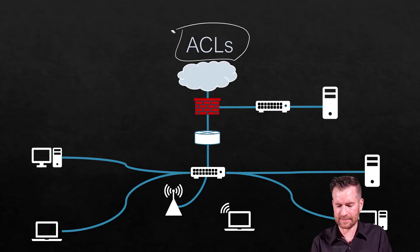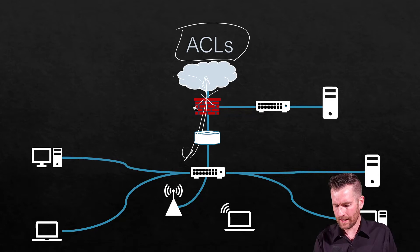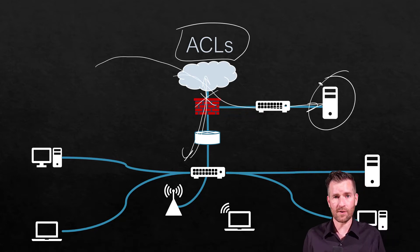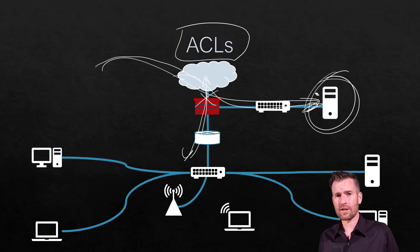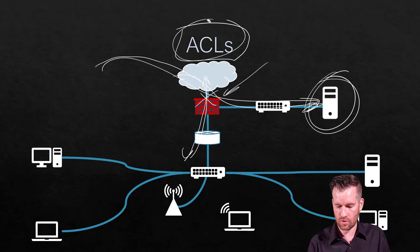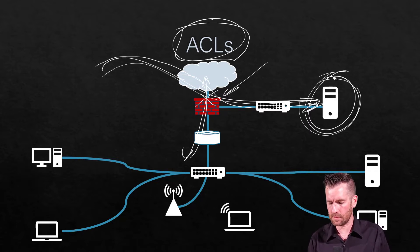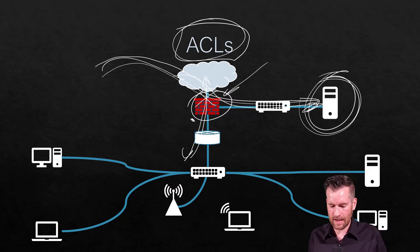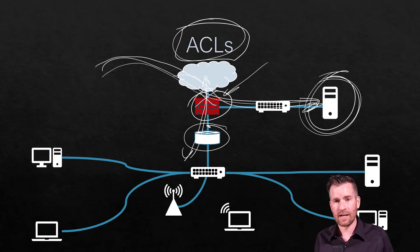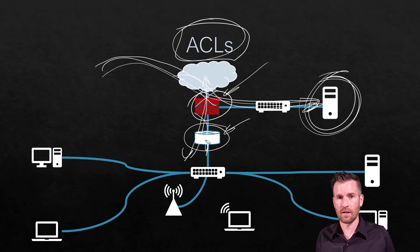Let's talk about access control lists. Most firewalls are set up so traffic can go out, but only return traffic comes back in, and all other traffic gets stopped at the front door. However, there are times when you want to allow traffic to something like a web server to host a company website internally. We can control how a firewall works with access control lists — a list of statements that can allow or deny certain traffic. ACLs also work on routers to allow or deny traffic between networks within your company.